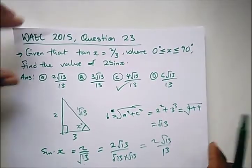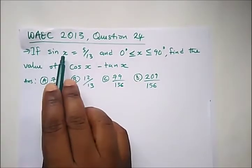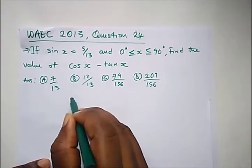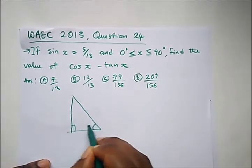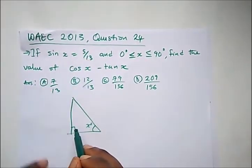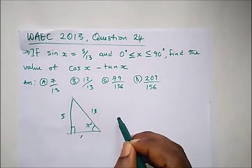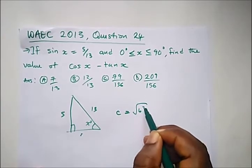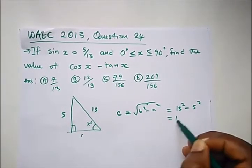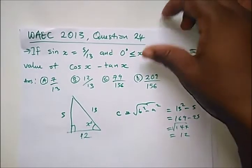We have another question from WAEC 2013, question 24. It says: if sin x equals 5 over 13 in a right angle triangle, find the value of cos x minus tan x. We draw the triangle and place angle x. Sin x is opposite over hypotenuse, so the opposite side is 5 and the hypotenuse is 13. To find the adjacent side: root of (13 squared minus 5 squared) equals root of (169 minus 25), which is root 144, giving 12.